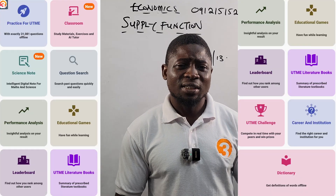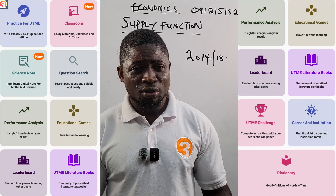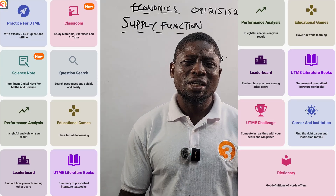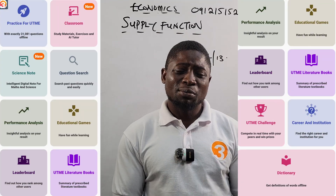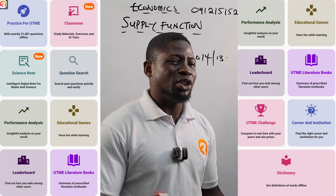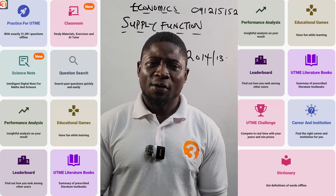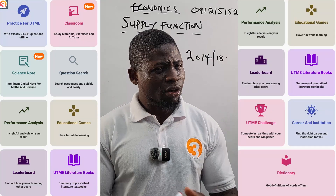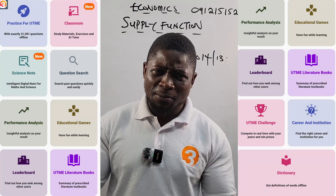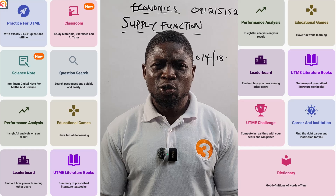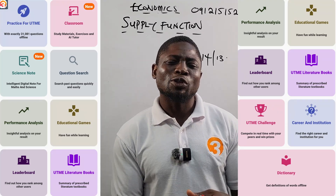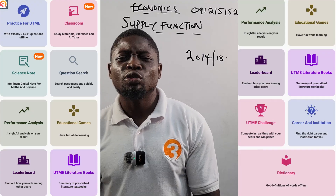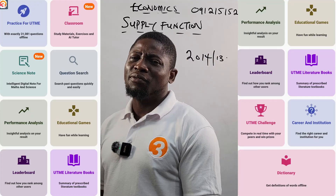Ensure you download the O3 School JAMB app. It has everything you need to succeed in your exam — lecture notes structured according to the JAMB syllabus, so you don't need to buy textbooks. It has all the past questions you need for your exam. In the practice for UTME section you'll see all the past questions, and the JAMB syllabus is also present in the classroom, so you don't need to go searching for the JAMB syllabus. There is also a question search feature.